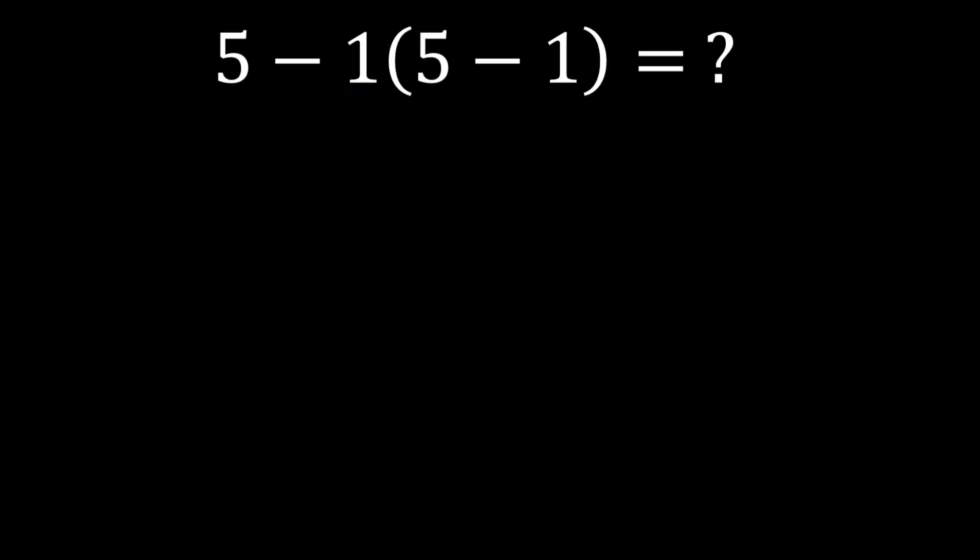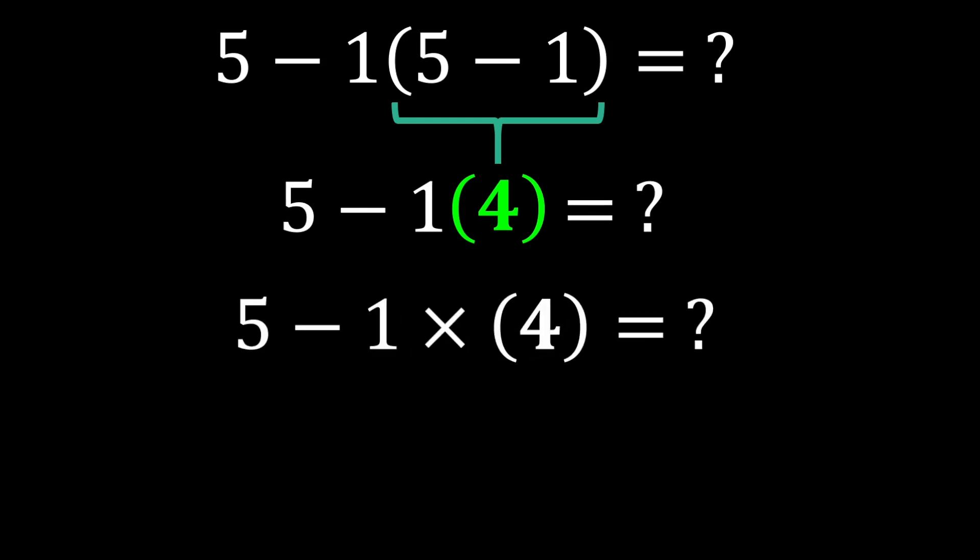5 minus 1 multiplied by 5 minus 1. According to PEMDAS, we first calculate inside the parentheses, 5 minus 1 gives us 4. And the expression becomes 5 minus 1 multiplied by 4. When a number is next to parentheses, it means multiplying that number by the value inside the parentheses, but usually, for simplicity, the multiplication sign is not written.